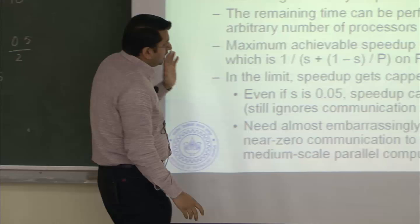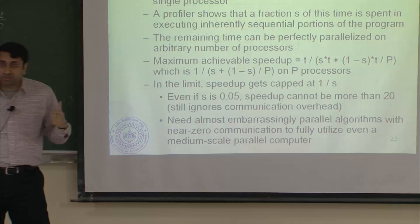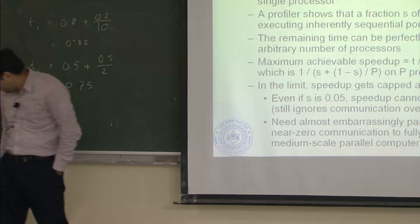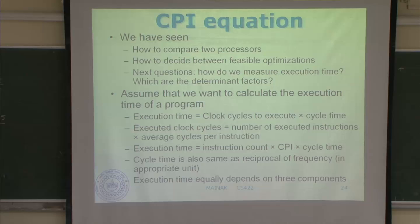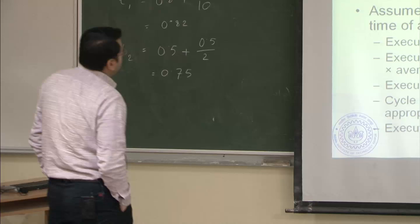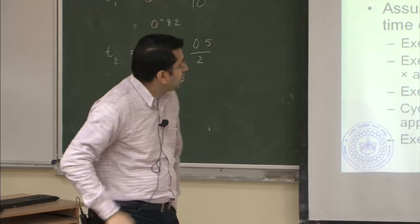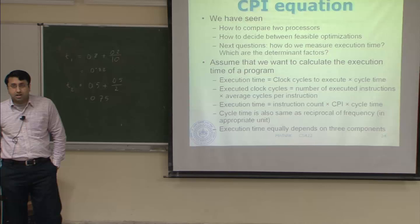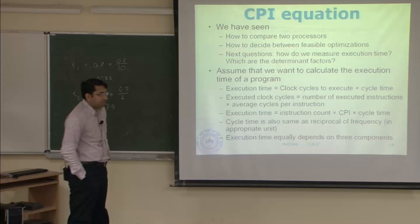That is a very important application of Amdahl's law, although you will probably not use this particular aspect in this course — it is normally used in parallel computing or parallel computer architecture courses. The next important topic for performance measurement is the CPI equation, which is again common sense. We know how to compare processors and how to decide between design optimizations by applying Amdahl's law. The next question is: how do we really measure execution time?